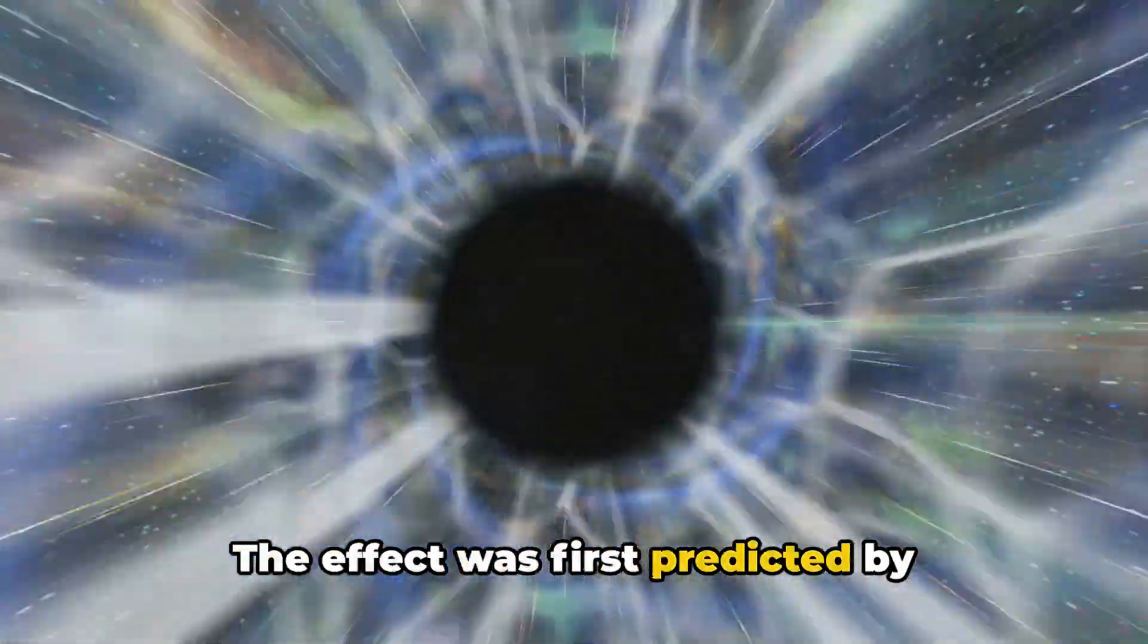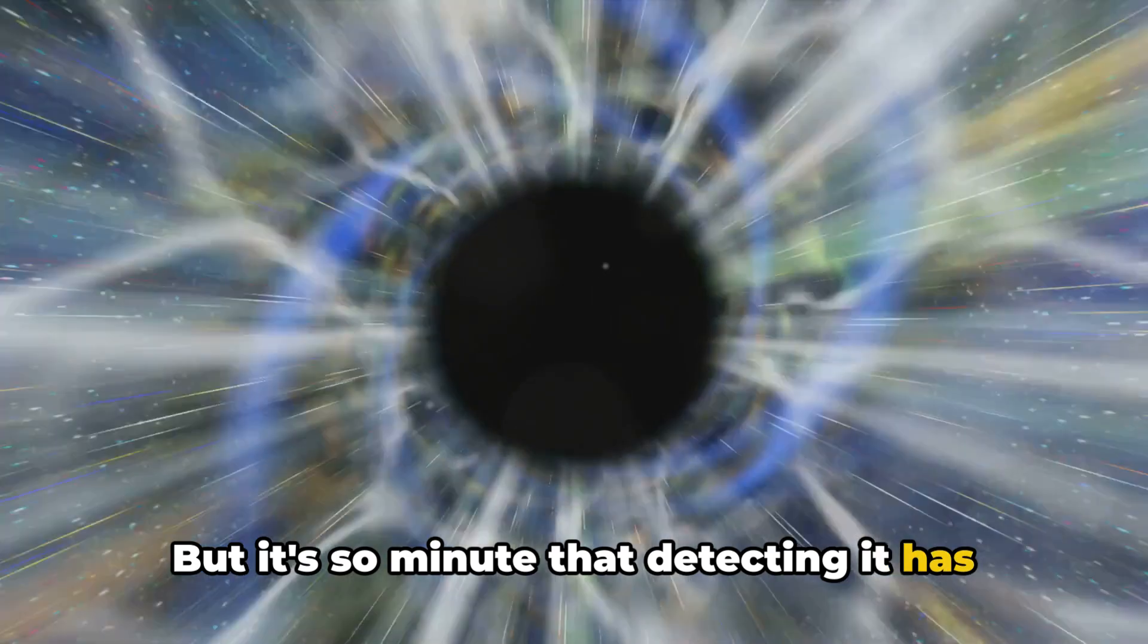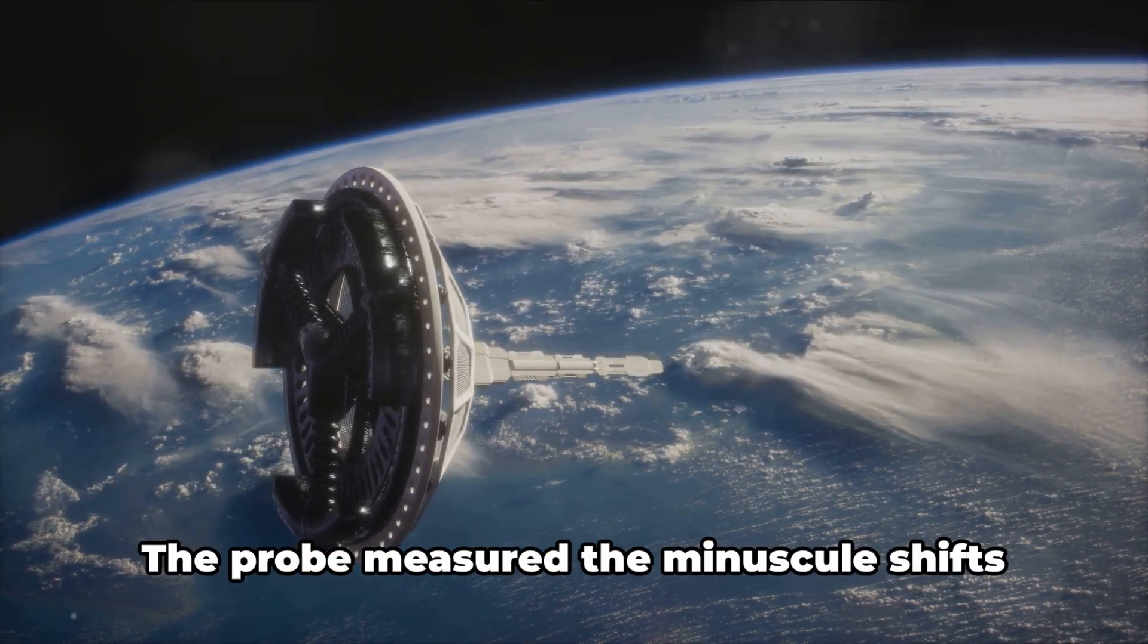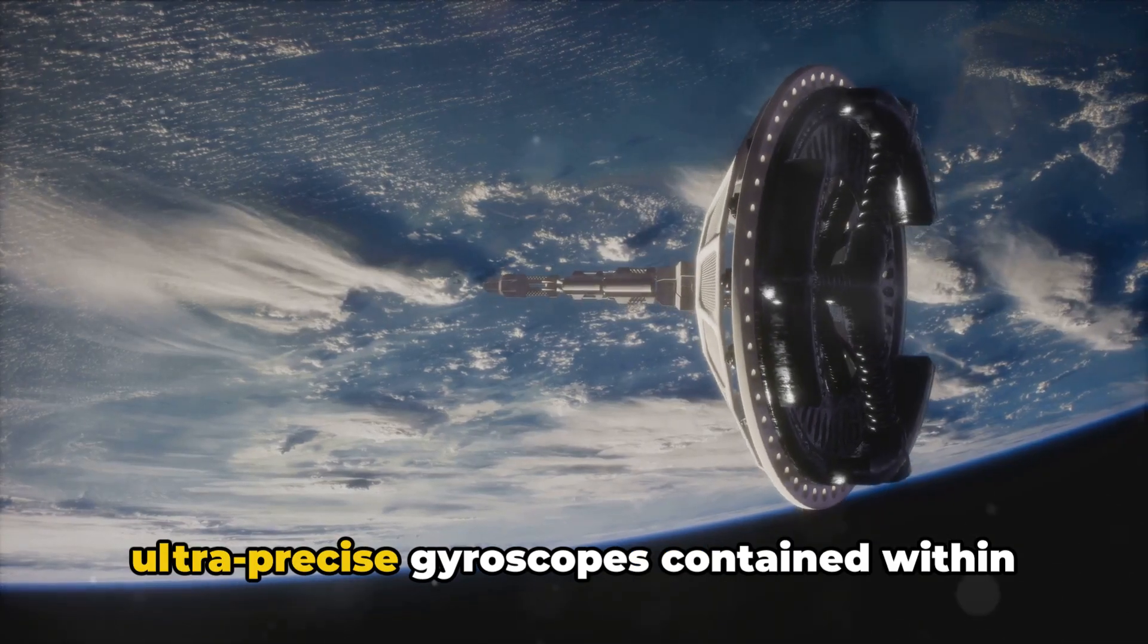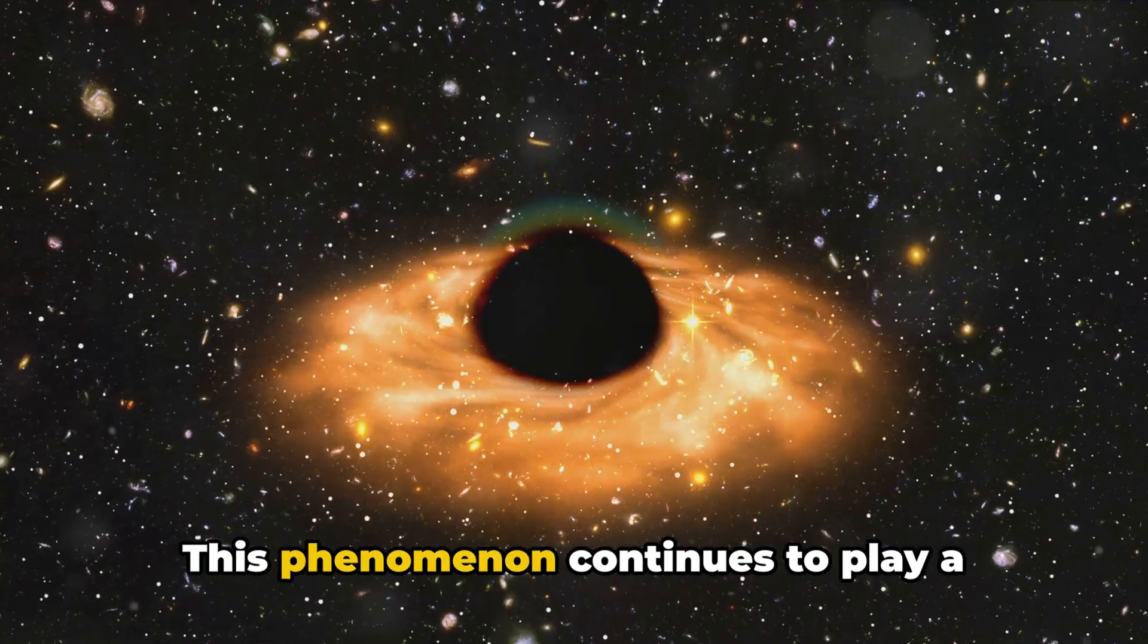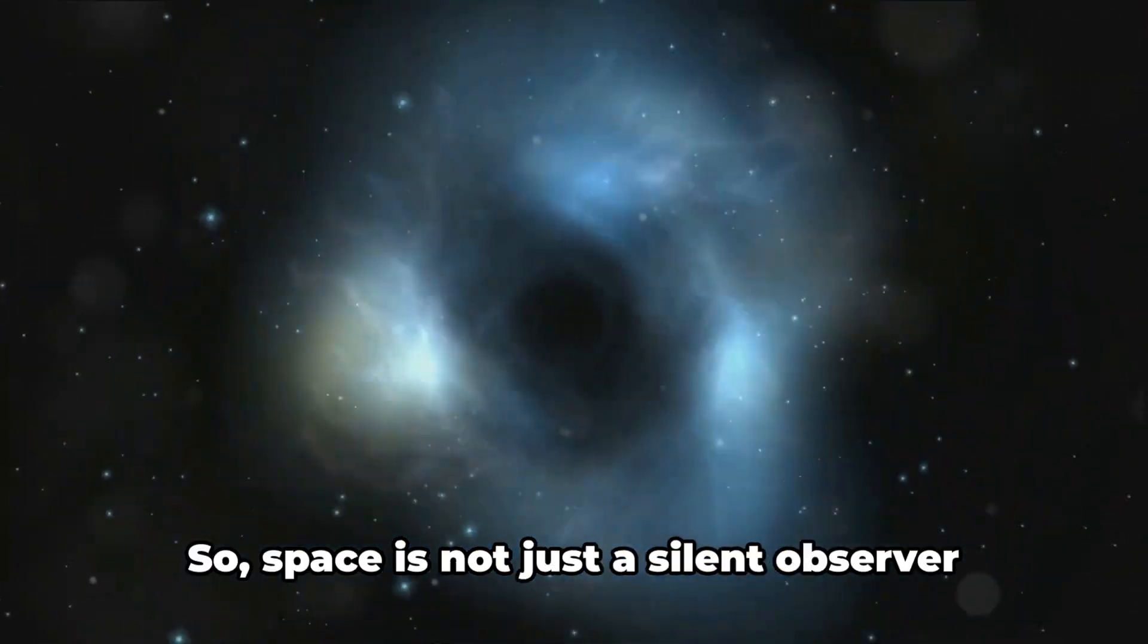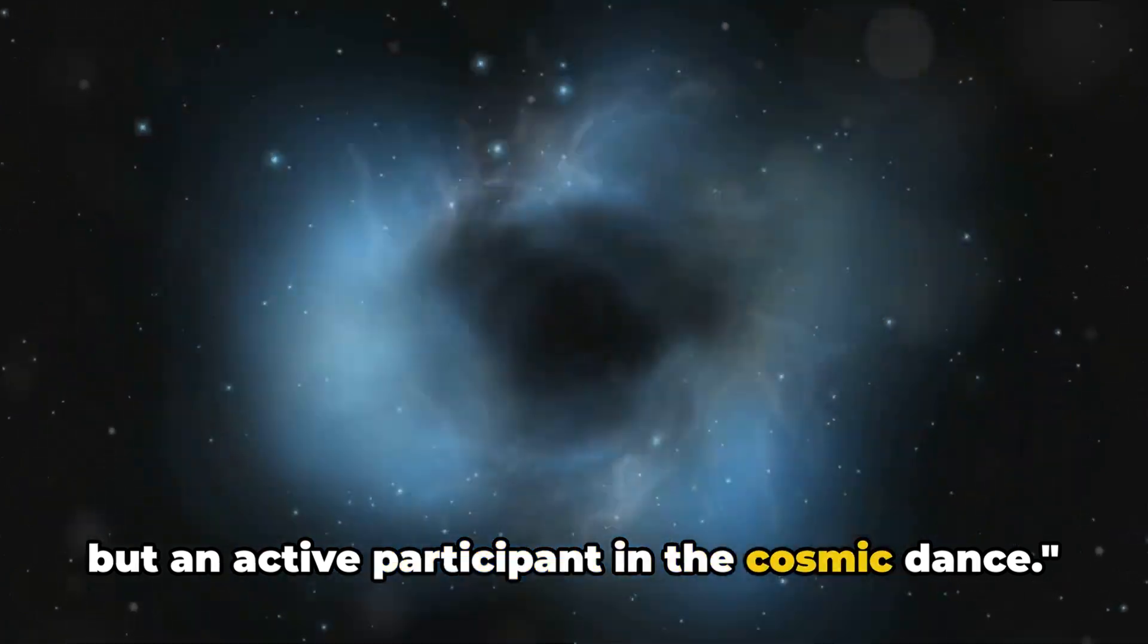The effect was first predicted by Einstein's theory of general relativity, but it's so minute that detecting it has been a challenge for scientists. It wasn't until the early 21st century when NASA's Gravity Probe B confirmed its existence. The probe measured the minuscule shifts in the direction of spin of four ultra-precise gyroscopes contained within it as they orbited Earth. This phenomenon continues to play a critical role in understanding the behavior of black holes and the very nature of the universe itself. So, space is not just a silent observer, but an active participant in the cosmic dance.